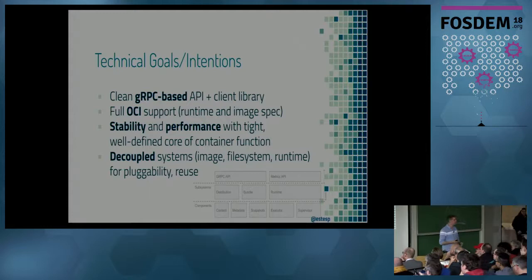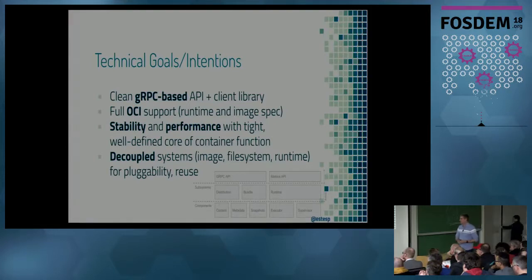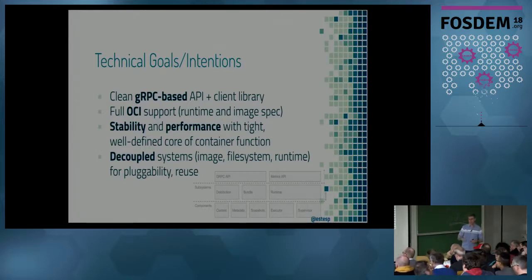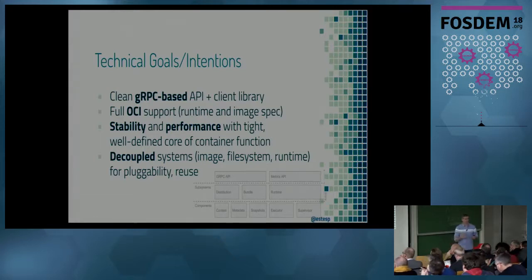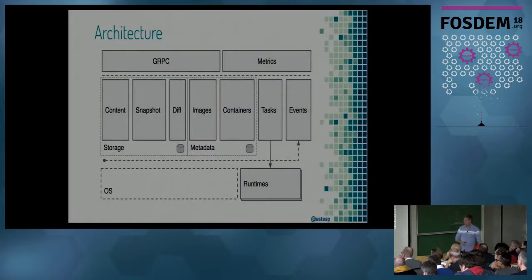You might look at ContainerD and think: is this just a cut-down Docker, a smaller version of the big Docker engine? No. In a lot of ways, it used the learnings of the first two or three years of the Docker runtime to rethink some of the things that were done and some that weren't done as well as we'd have liked. There's a set of technical goals: use gRPC for the API, immediately be fully based around OCI — both the image spec and the runtime spec. The focus would be stability and performance rather than new features and new releases, with a well-defined core base of functionality. Each part of ContainerD would be fully decoupled — image, files, snapshots, runtime — all potentially pluggable and reusable even without the rest of ContainerD.